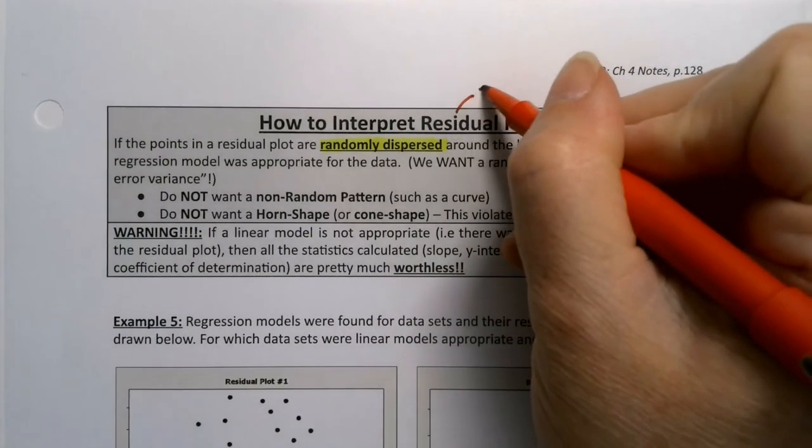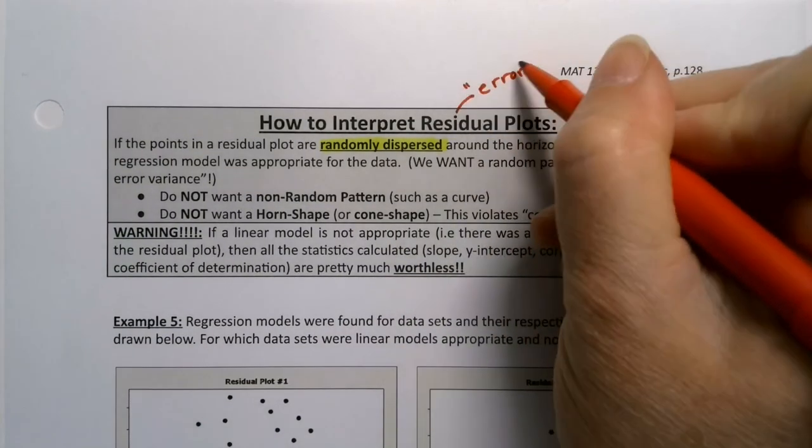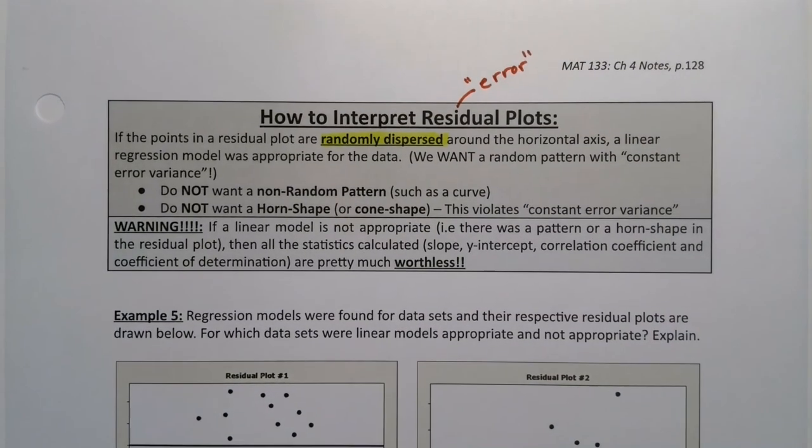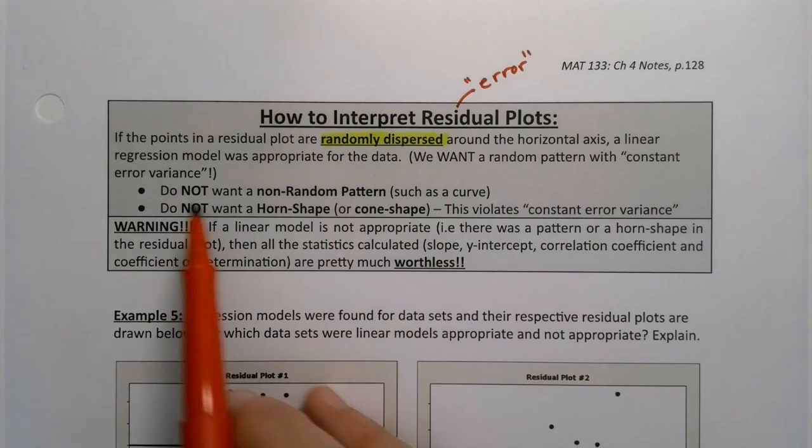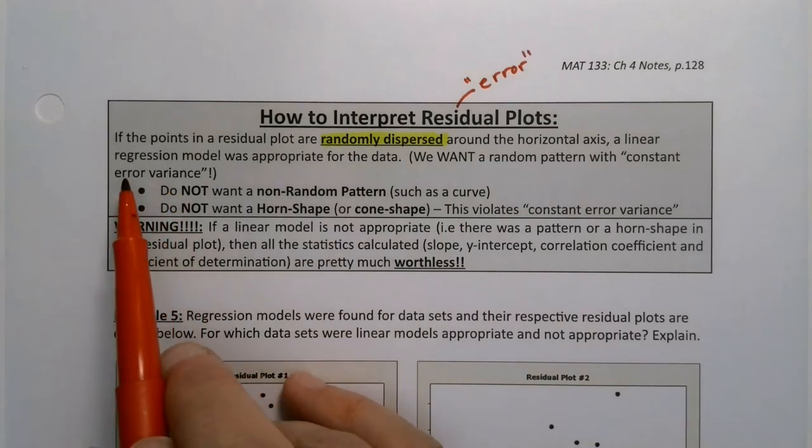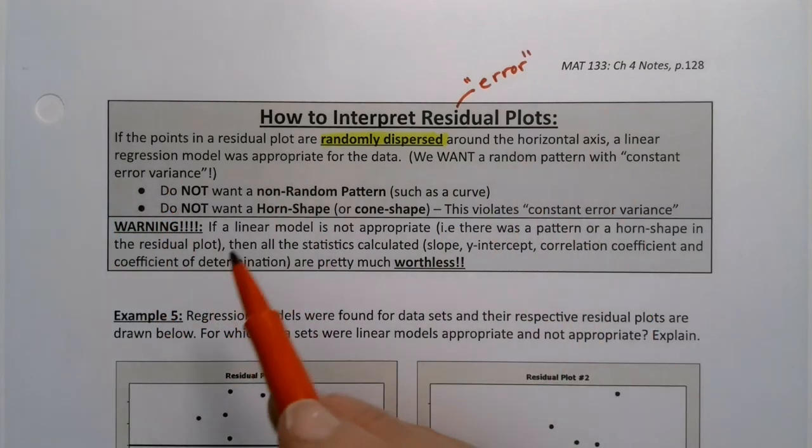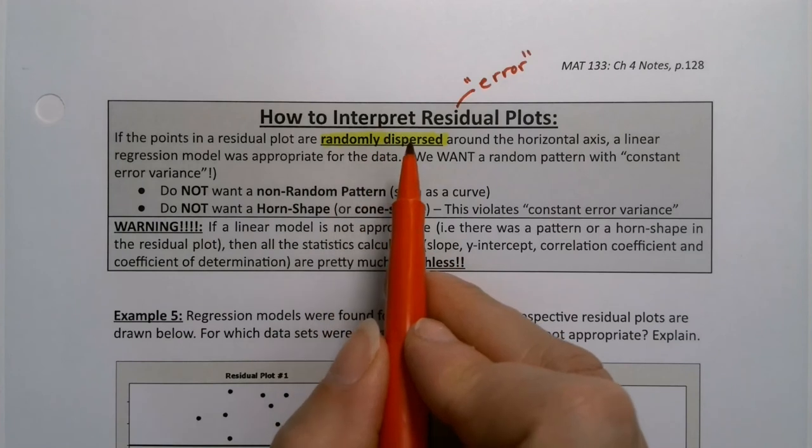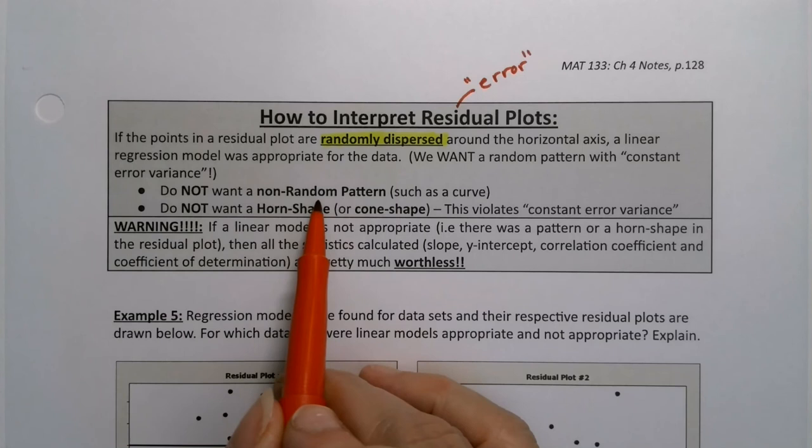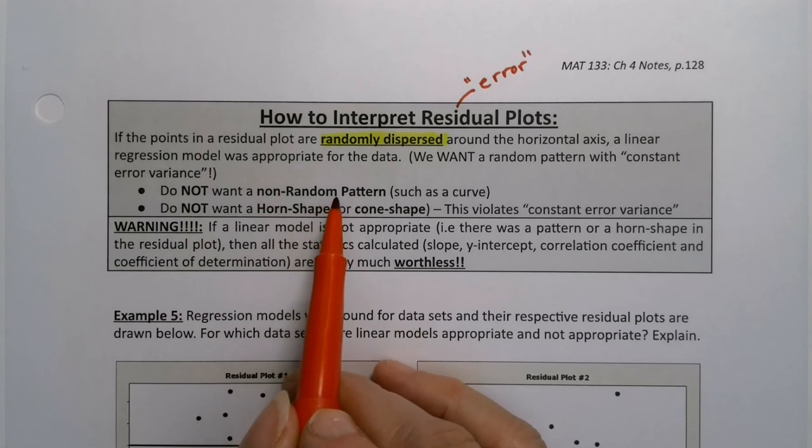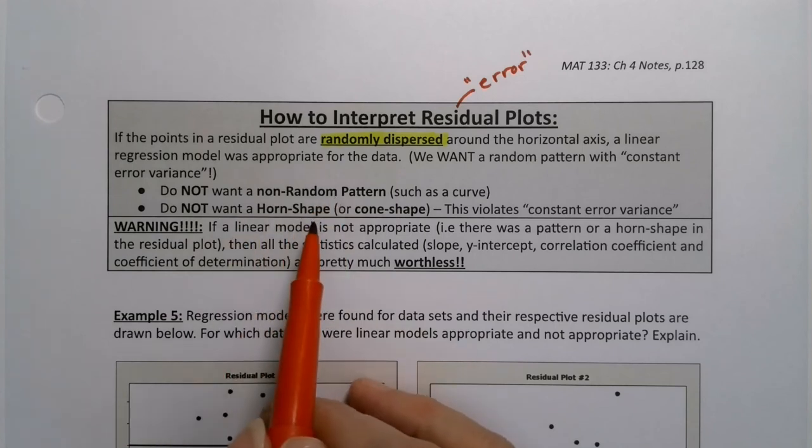So, it's a fancy word for error. So, you want that error to be constant. You want the variability of the error, the variance of the error to be constant. So, you want it to be randomly dispersed. Like somebody just tossed the points around. You don't want a non-random pattern. I can say it again. And you do not want a horn shape.